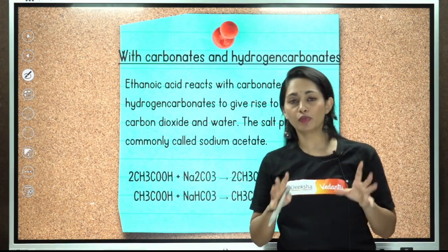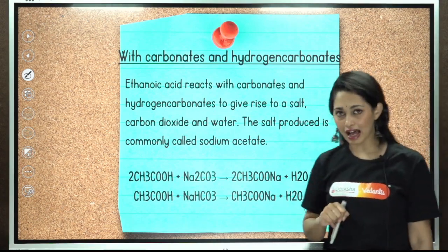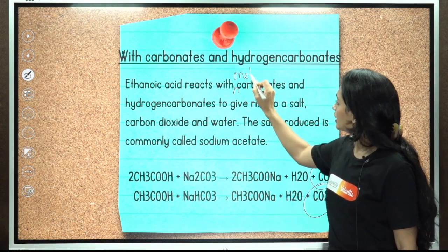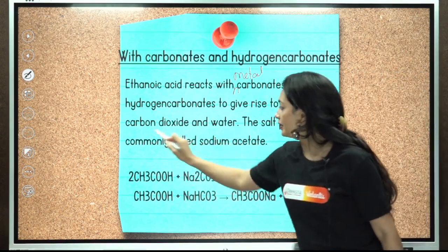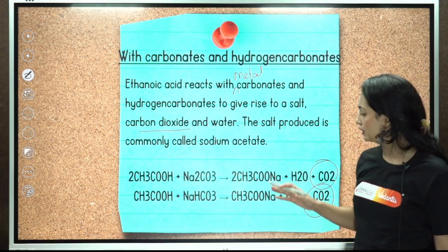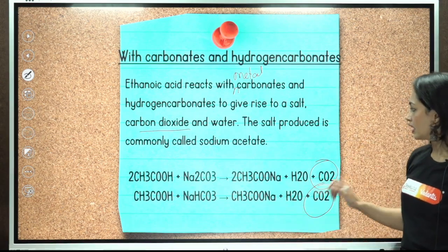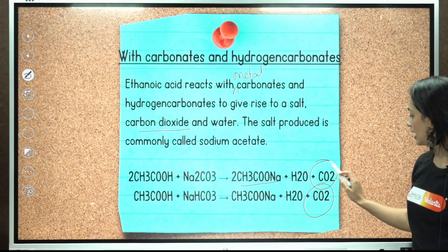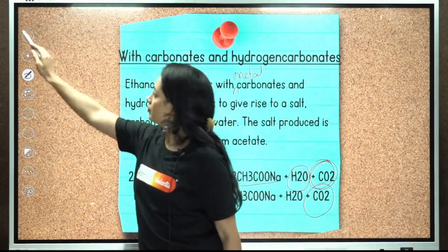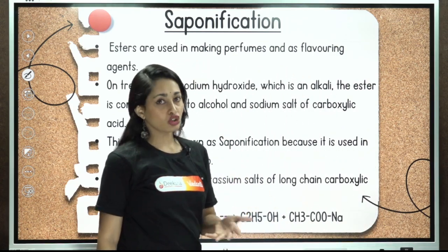Reaction with carbonates and hydrogen carbonates: in the second chapter we discussed that acids react with metal carbonates or bicarbonates to give carbon dioxide gas. The same happens here. Ethanoic acid reacts with metal carbonates and hydrogencarbonates to give a salt, carbon dioxide, and water. The salt produced is sodium acetate — this holds true for both sodium carbonate and sodium bicarbonate.